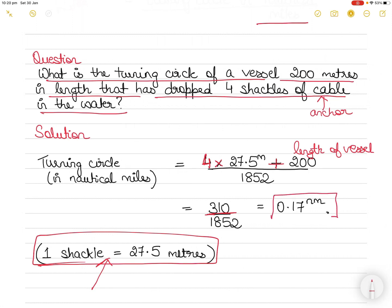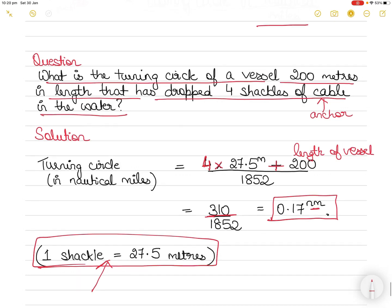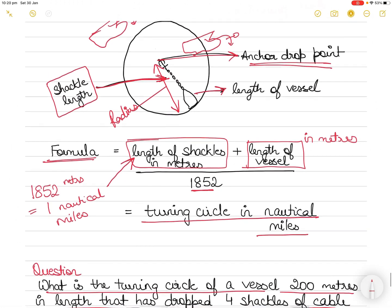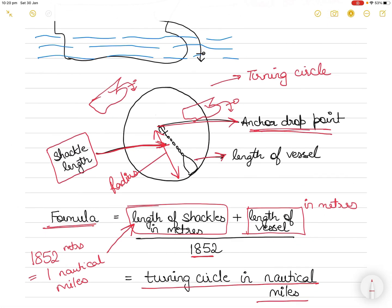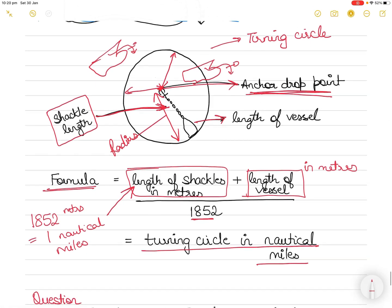310 ÷ 1852 gives a turning circle radius of 0.17 nautical miles. You then go to the chart, pinpoint the anchor dropping point, and keeping that point at the center, draw the turning circle using a radius of 0.17 nautical miles. Use a compass and measure out 0.17 nautical miles from the chart's latitude scale, then draw the circle.